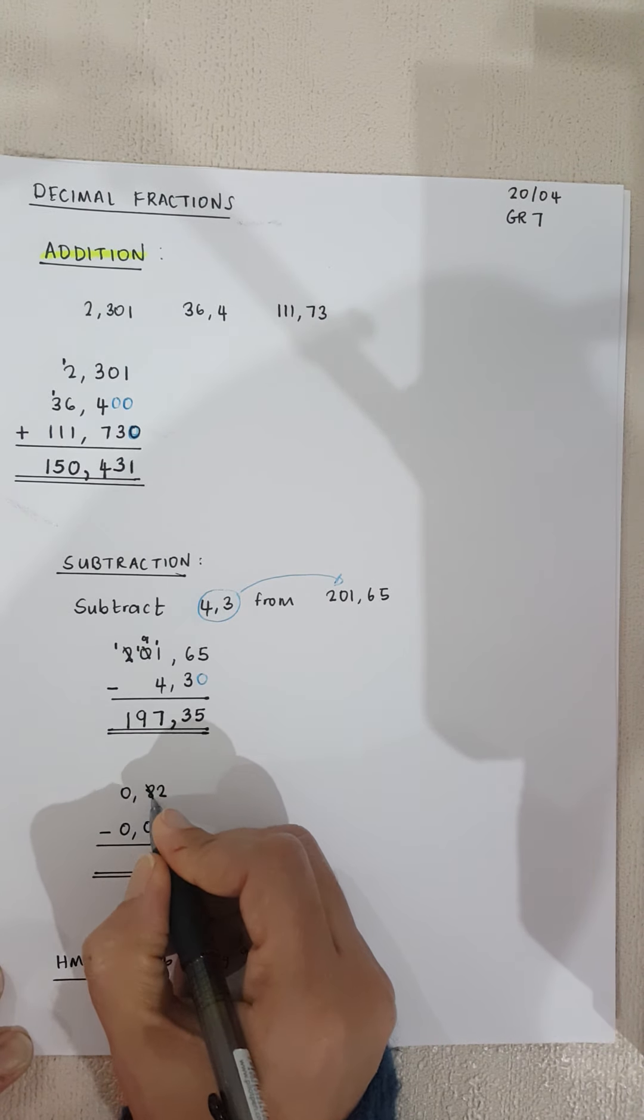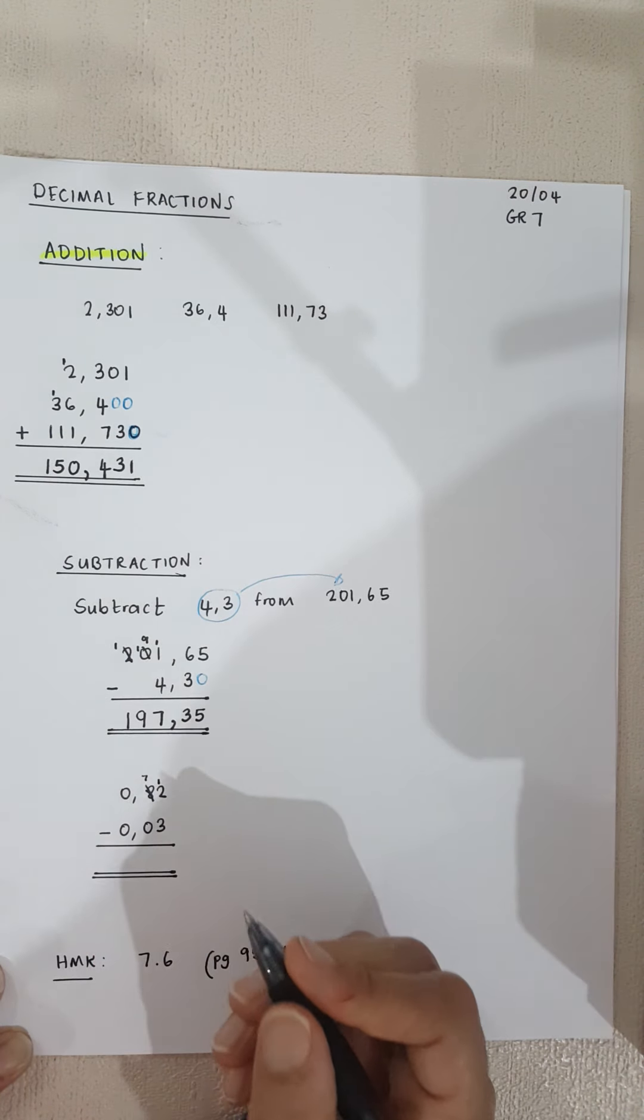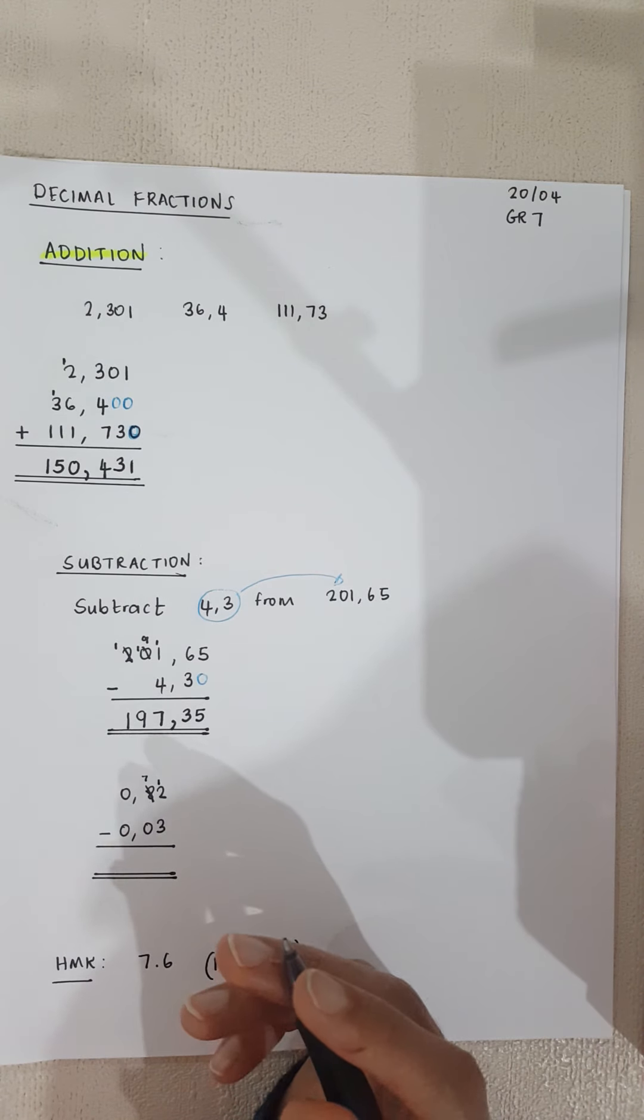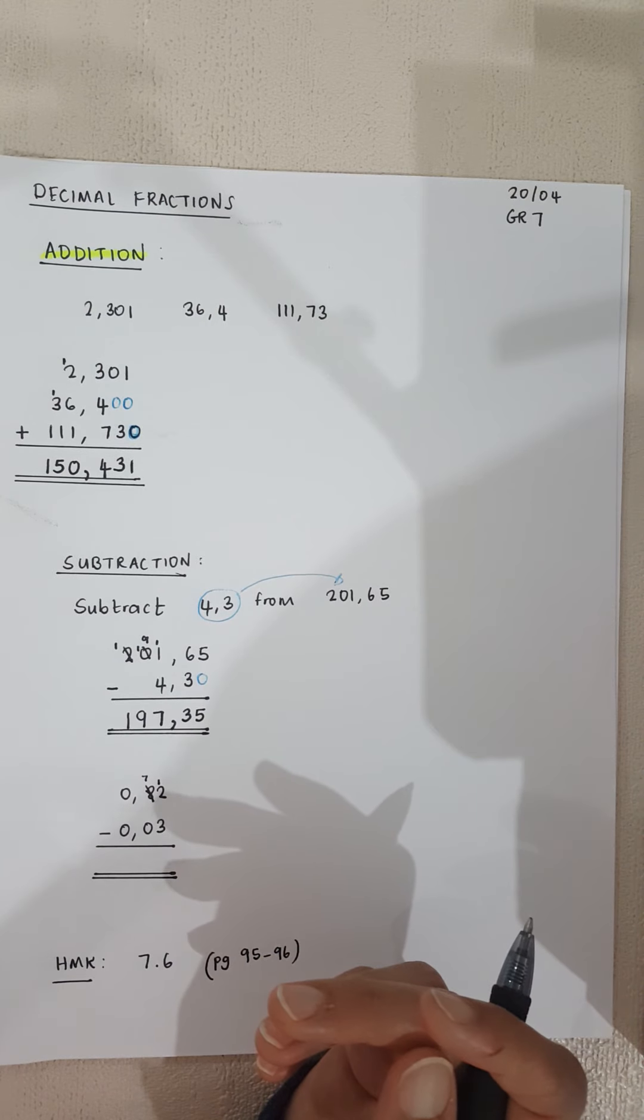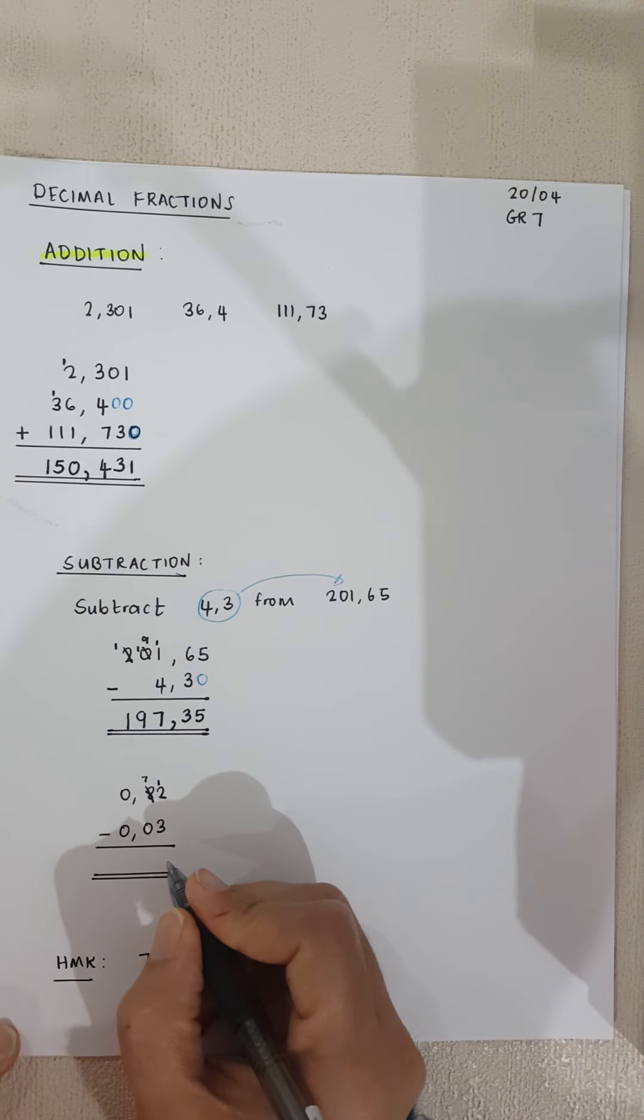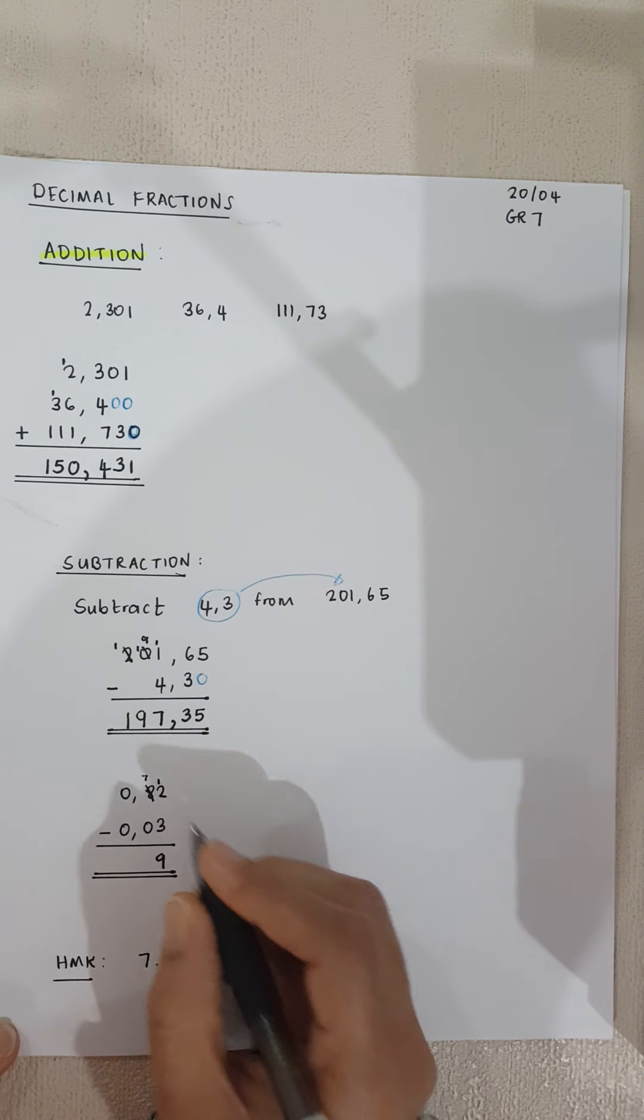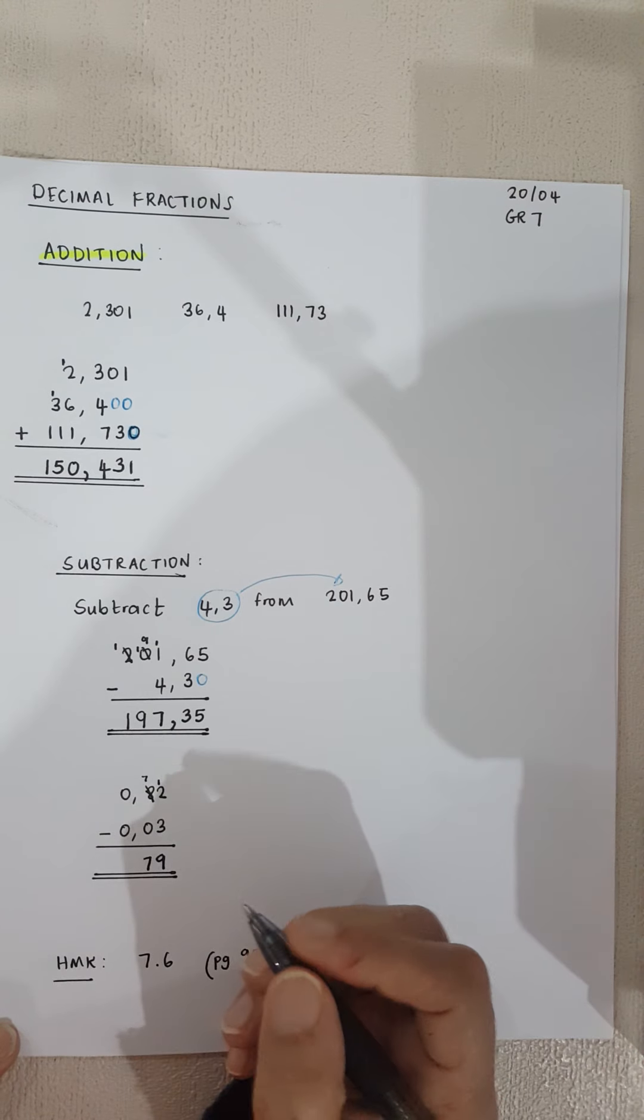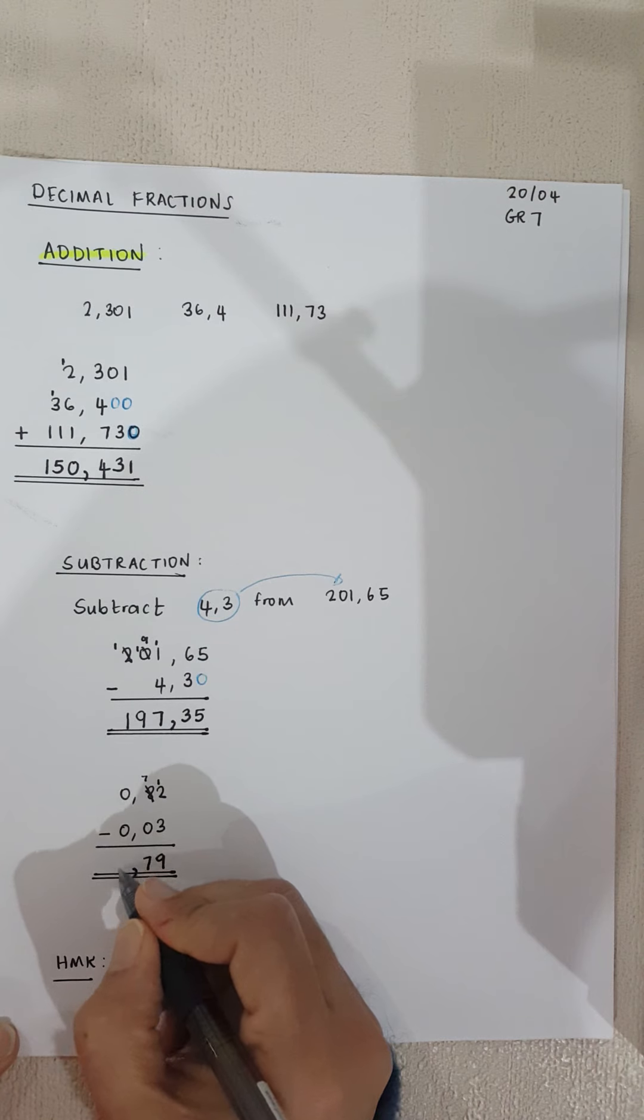So I'm going to borrow from the 8. I'm scratching the 8 out, I make it a 7, and I've borrowed a 1, a 10, so it's become 12. So 12 minus 3 becomes 9. I've got a 9. 7 minus 0 becomes 7, and then 0. I put my comma down and I've got a 0.